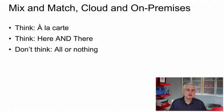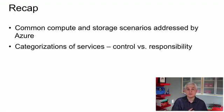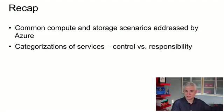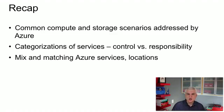So let's recap what we talked about in this module. We talked about the vast array of scenarios addressed by Microsoft Azure and mapped some services to those scenarios. We talked about the categorizations of services — Infrastructure as a Service, Platform as a Service, and Software as a Service — and how these categorizations can help you understand how much control and responsibility a given Azure service requires. You can then choose the right piece of the puzzle based on your tolerance for control and responsibility. Finally, we learned that Azure services can be mixed and matched — you can employ some or all services for your particular solution regardless of where other parts are deployed, whether on-premises or in the cloud. That wraps up this module. We'll see you in the next one.